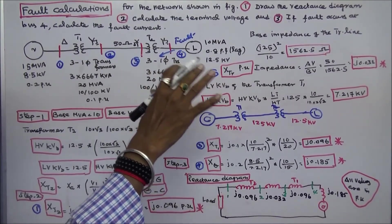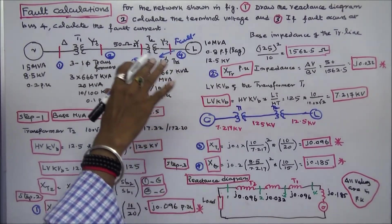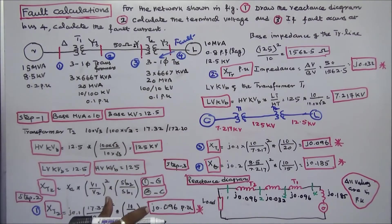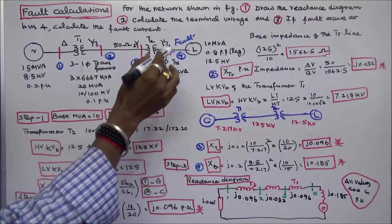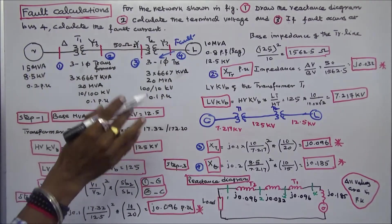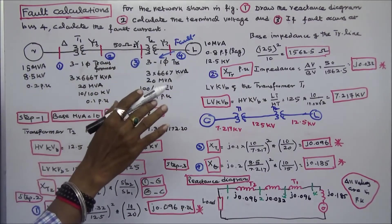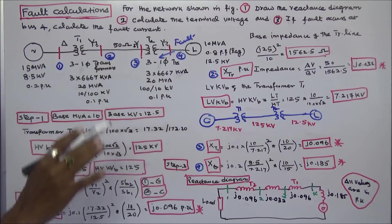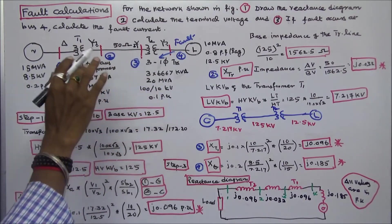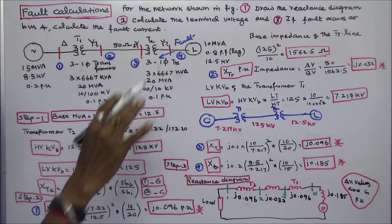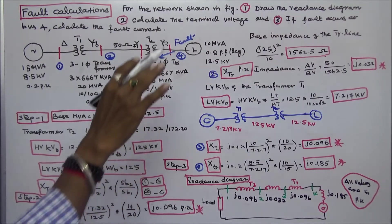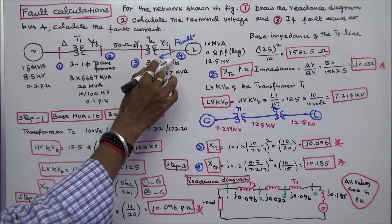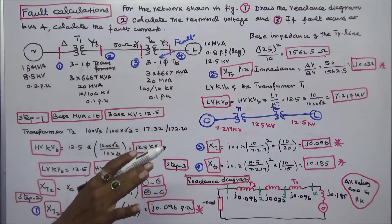In this class we work out one problem on symmetrical fault calculation using Thevenin's theorem. For the network shown in the figure, the first question is to draw the reactance diagram of the network. Second question is to calculate the terminal voltage. Third question is: if a fault occurs at bus 4, calculate the fault current.